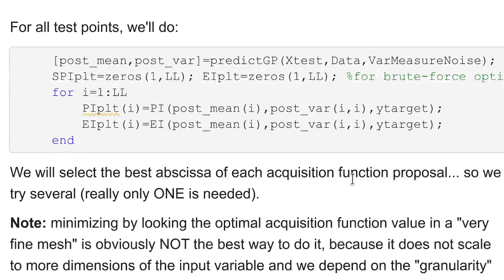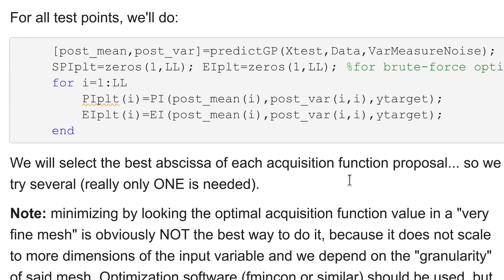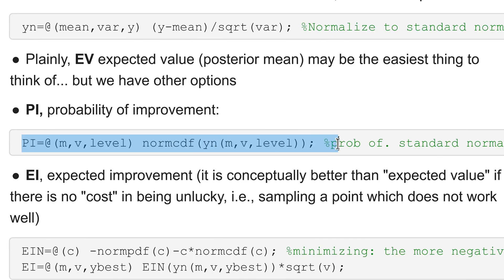Then we must compute the acquisition function in order to carry out Bayesian optimization. In this code I will compute four acquisition functions but of course if you choose just one of them you can comment out everything else. In here I will compute the probability of improvement and the expected improvement with this formula and this formula respectively.